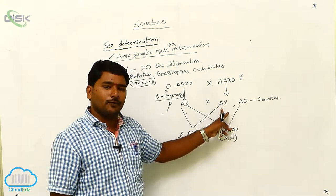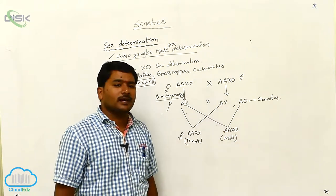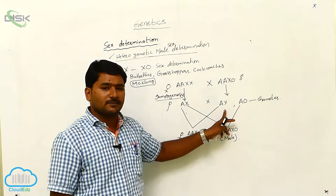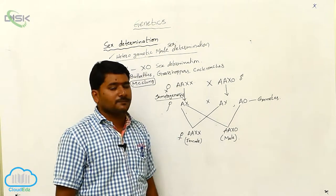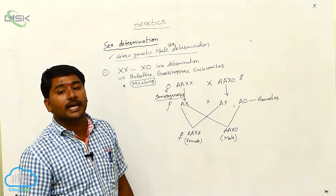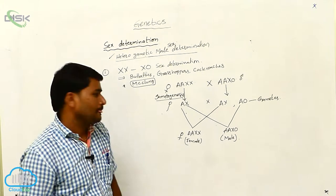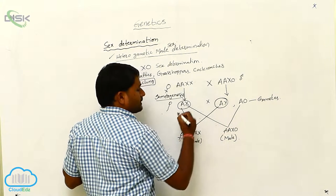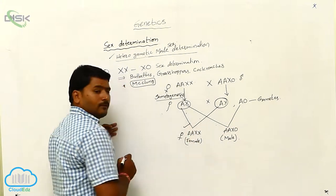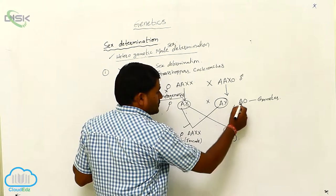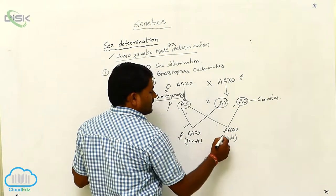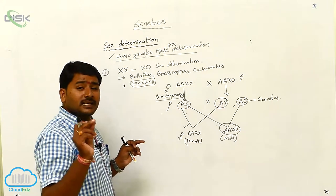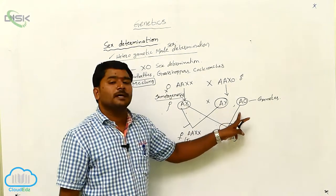Ax is one type of ovum, A0 is one type of ovum — sperms, sorry. So 50% of the sperms have Ax karyotype and 50% of the sperms have A0 karyotype. When this ovum mixes with the Ax type of sperm, that will become female. If Ax fuses with the A0 type of sperm, that will become male. So here, sex is determined by which sperm.